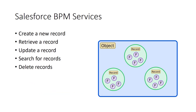The first area is that within your BPM processes, you can imagine creating services where you might want to create a new record on Salesforce, retrieve an existing record, update a record, search for existing records, or delete records. These are the so-called CRUD operations: Create, Retrieve, Update, and Delete.